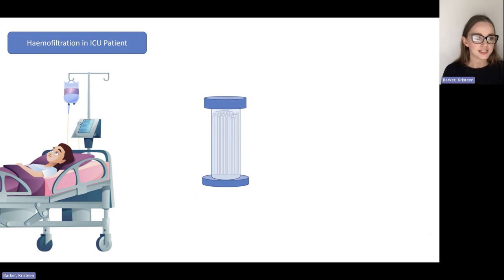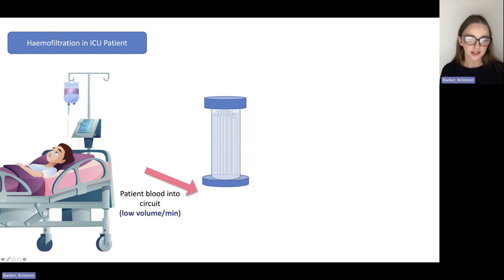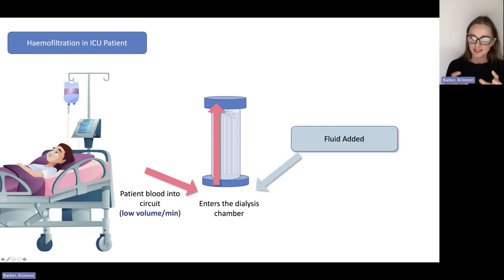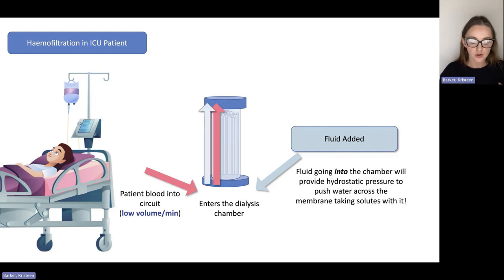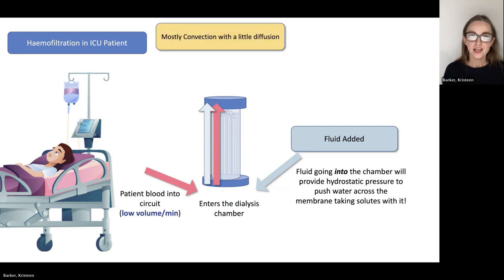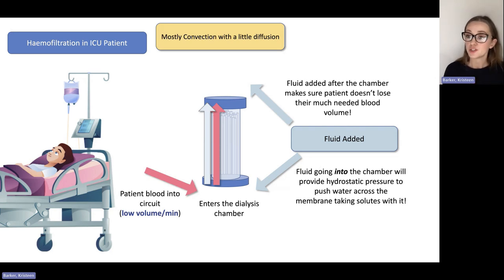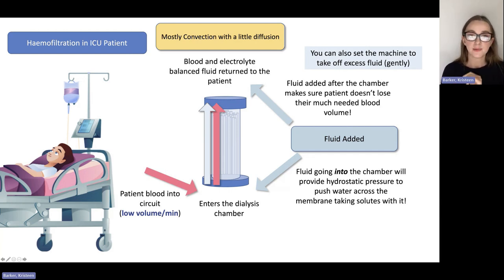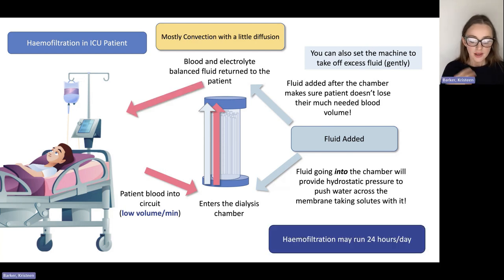In ICU, hemofiltration is a little bit different. The patient is connected, their blood leaves them but at very low volumes — because obviously they need their blood volume in ICU. That blood enters the dialysis chamber, but this time we add some fluid to the chamber. Along with their blood, we put fluid in, and that creates a hydrostatic pressure that pushes solutes across the membrane so we can remove them. So here it's mostly convection with a little bit of diffusion. We can also add fluid after the chamber to make sure they don't lose their blood volume, and you can program this to take off fluid and return both the blood and the balanced fluid to the patient. Because this is happening at low blood flows, we tend to run this around the clock — 24 hours a day.